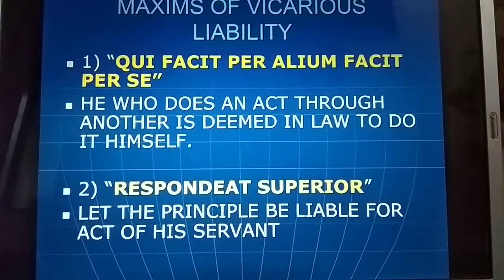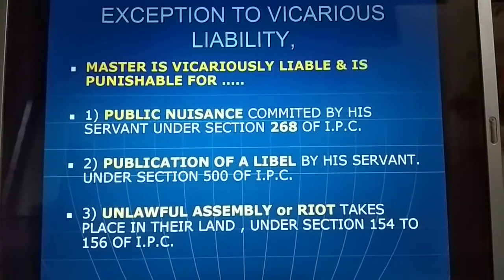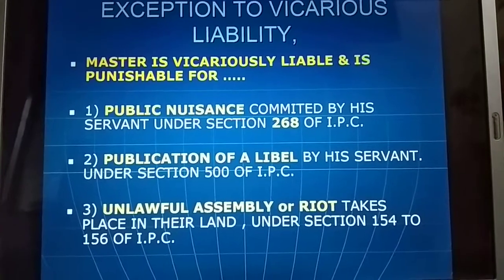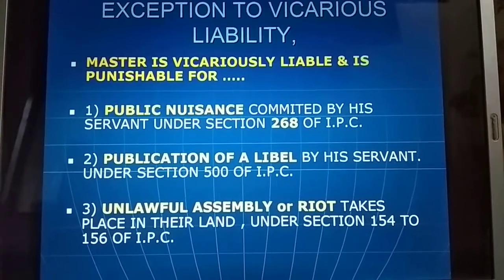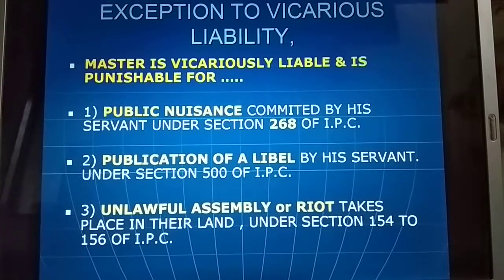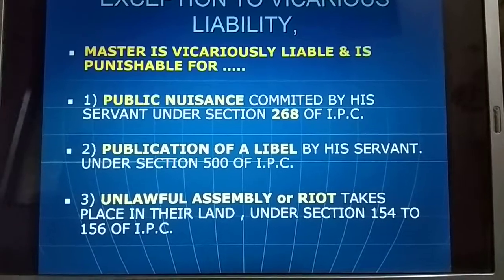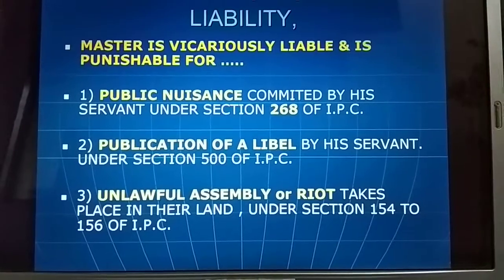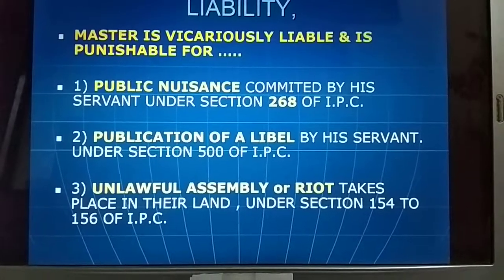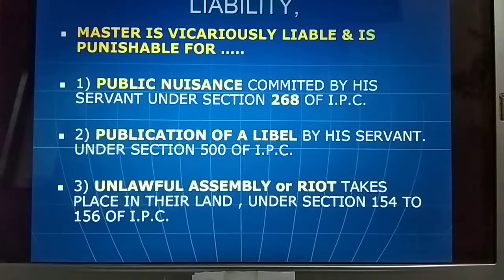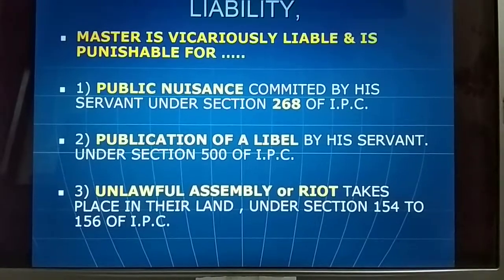Now, exceptions to vicarious liability: a master is vicariously liable and punishable for — first, public nuisance committed by his servant under Section 268 of IPC; second, publication of a libel by his servant under Section 500 of IPC; and third, unlawful assembly or riot taking place on their land under Sections 154 to 156 of IPC.